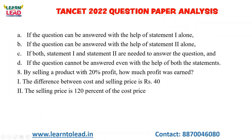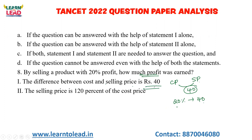Next: By selling a product with 20% profit, how much profit was earned? The difference between cost price and selling price is 40 rupees. If the profit is 20% and the difference between cost and selling price is 40, then 20% profit equals 40 rupees. So the profit earned is 40 rupees. Very simple.